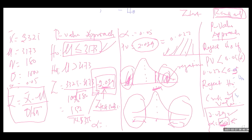The Z-critical value from our table for alpha equal to 0.05 is 1.64. Now we compare our Z-test statistic of 2.039 to this Z-critical value of 1.64.